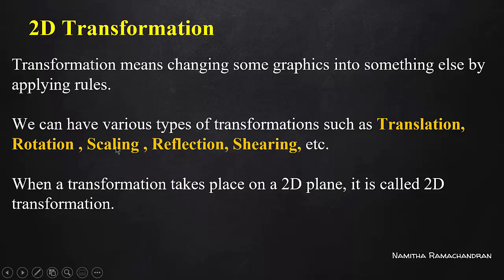In addition to the basic three, we have reflection and shearing — two more options. So in total, there are five different transformations: translation, rotation, scaling, reflection, and shearing. We are going to cover 2D transformation.